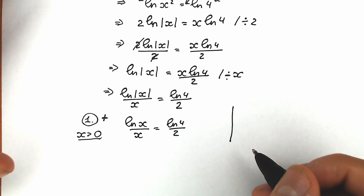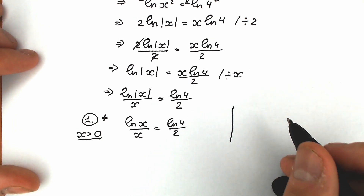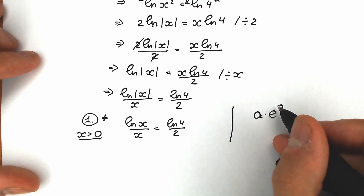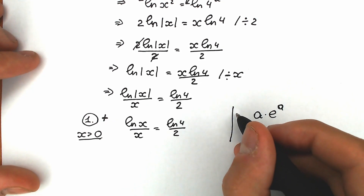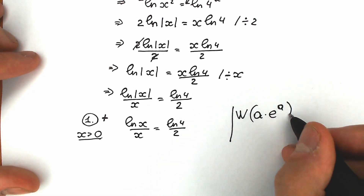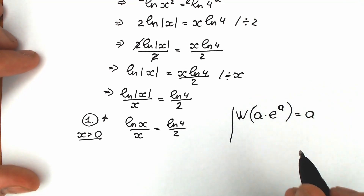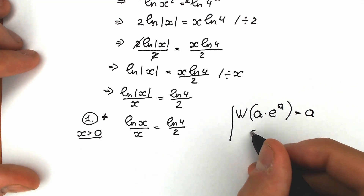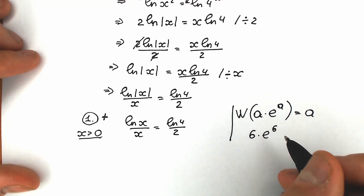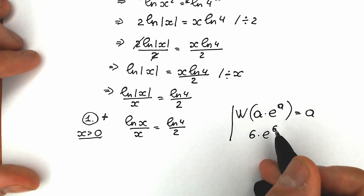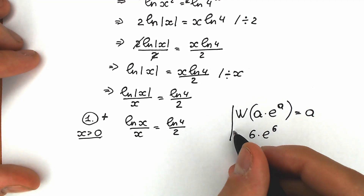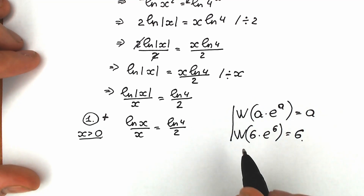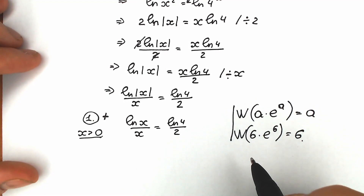Maybe you are a new viewer and want to learn it. So for example, we have a times e to the power a — a is the whole expression. When we apply Lambert W function from this expression, as a result we will have only a. For example, we have 6 times e to the power 6 — the same expression here and at the power of e. When we apply Lambert W function, as a result we have only 6. I hope you understand about this Lambert W function.